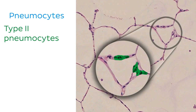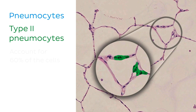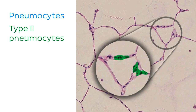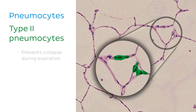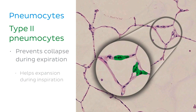The type 2 pneumocytes account for the other 60% of the cells, making up only about 10% of the surface area. These pneumocytes have a round shape and possess a cytoplasm rich in mitochondria, as well as both the rough and smooth endoplasmic reticulum. Type 2 cells secrete a substance called surfactant, which lines the alveolar walls to lower the surface tension, preventing the alveoli from collapsing during expiration and helping the walls to expand during inspiration.